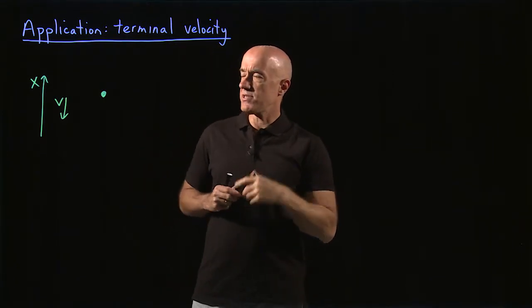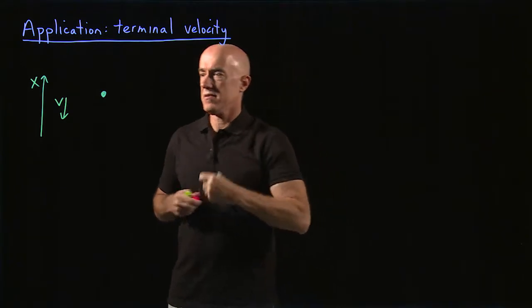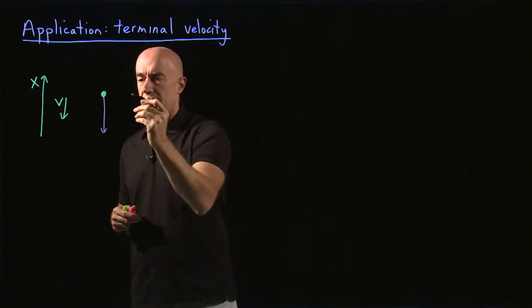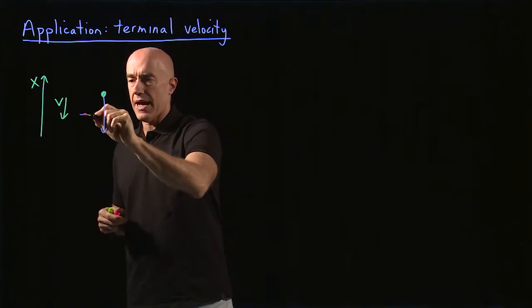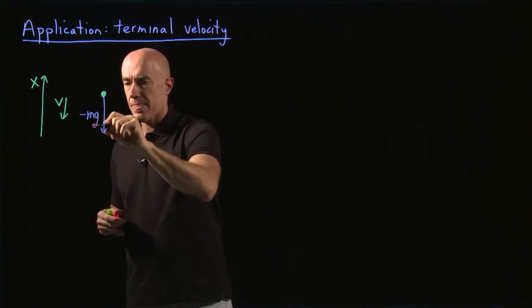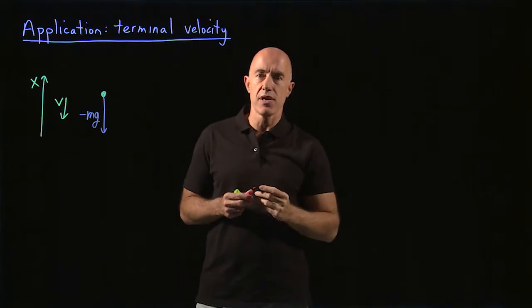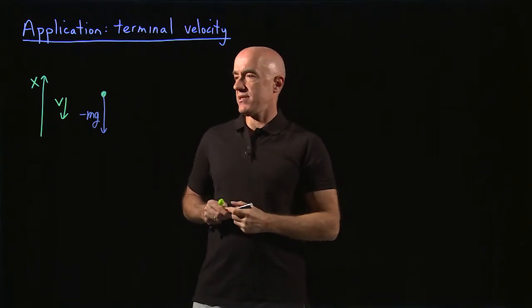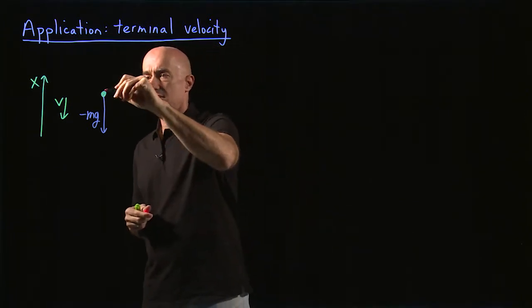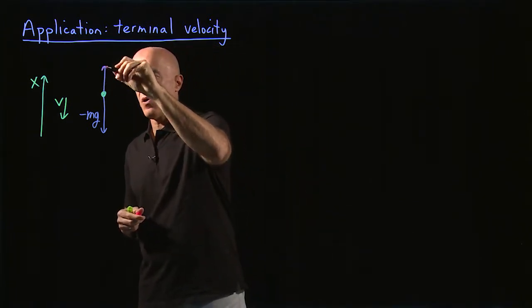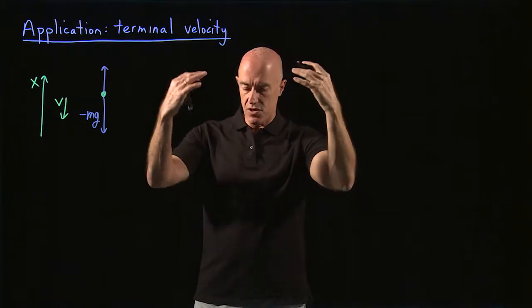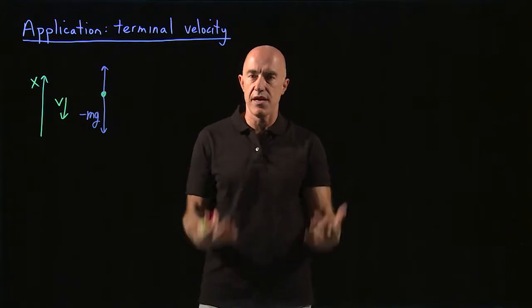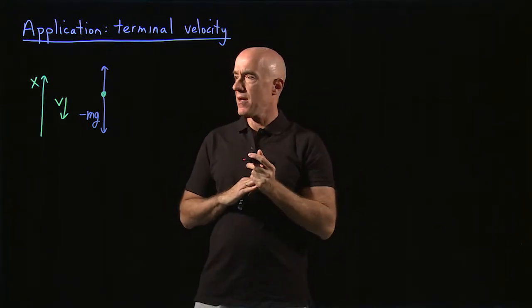The force on the skydiver is going to be gravity. So the gravitational force is going to be down. That's going to be minus mg. G is this 9.8 meters per second squared. And then the air resistance. The air resistance is going to be opposing the force of gravity. So he's moving down with some velocity so the air is pushing up.